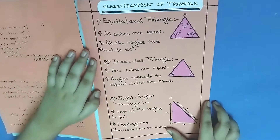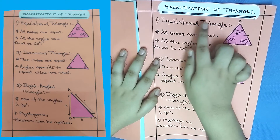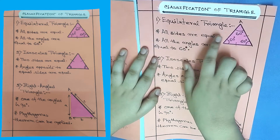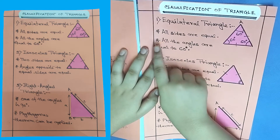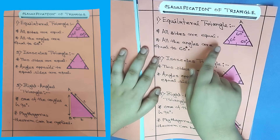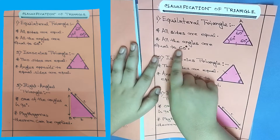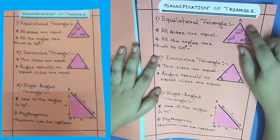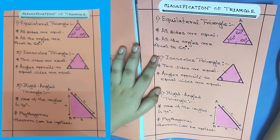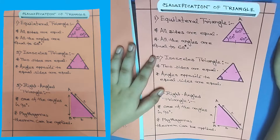This is the final page — classification of triangles. Number one: equilateral triangle. The requirements are all sides are equal and all angles are equal to 60 degrees. See — all sides are equal and all angles are 60 degrees.